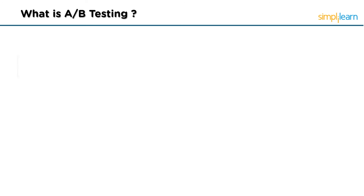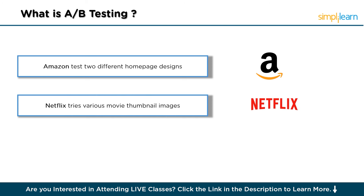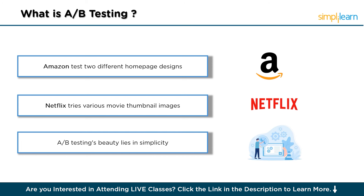Real-life examples include websites like Amazon trying two different homepage designs to see which one leads to more sales, or Netflix testing different movie thumbnail images to figure out which ones make more people want to watch. It's a way for businesses to make decisions based on actual customer behavior rather than just guessing. The beauty of A-B testing is in its simplicity — you change one thing, keep everything else the same, and measure the difference in how people react. Whether it's choosing the color of a button on a website or the subject line of an email, A-B testing provides a clear, evidence-based path to improvement.